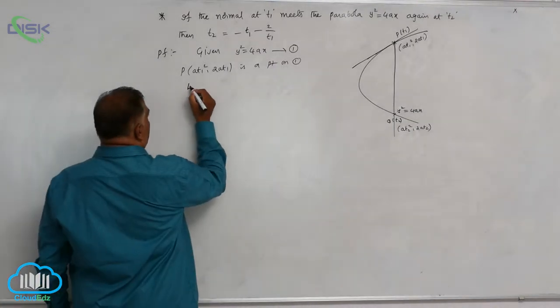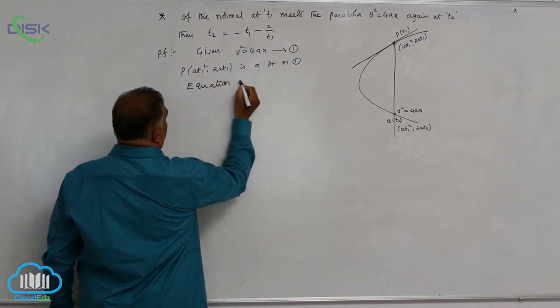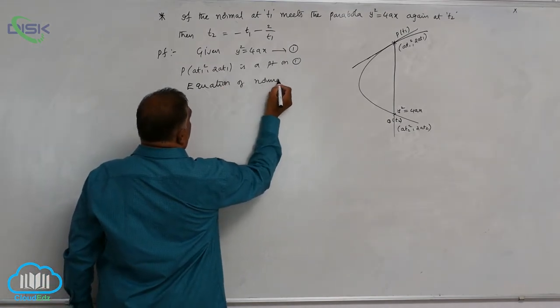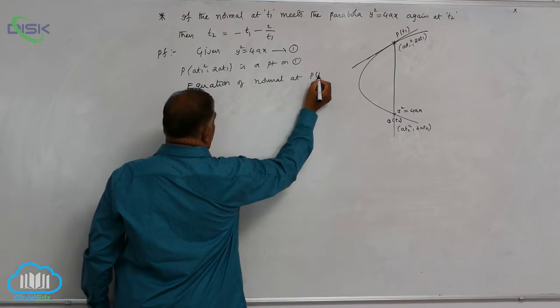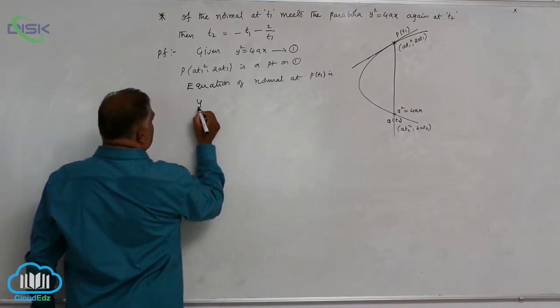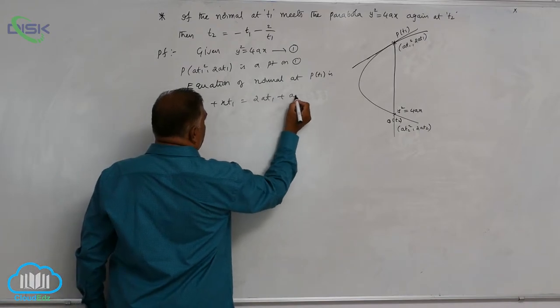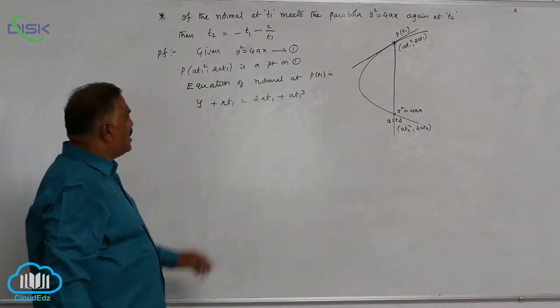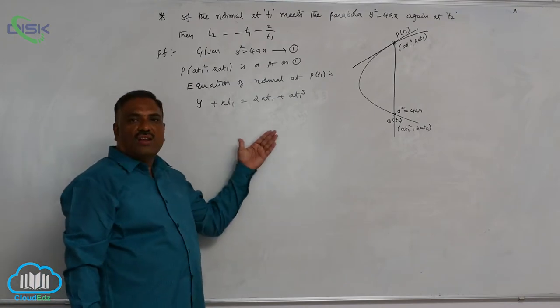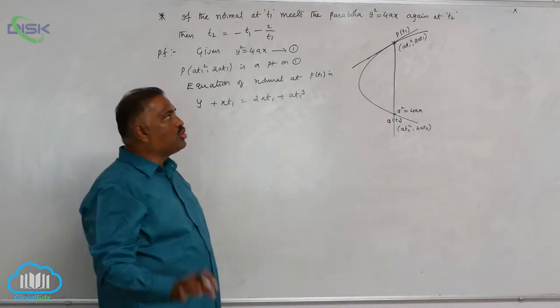So, equation of normal at P(T1) is y + xT1 = 2AT1 + AT1³. In our last discussion, we derived this result for normal equation. Now, you go through once again.